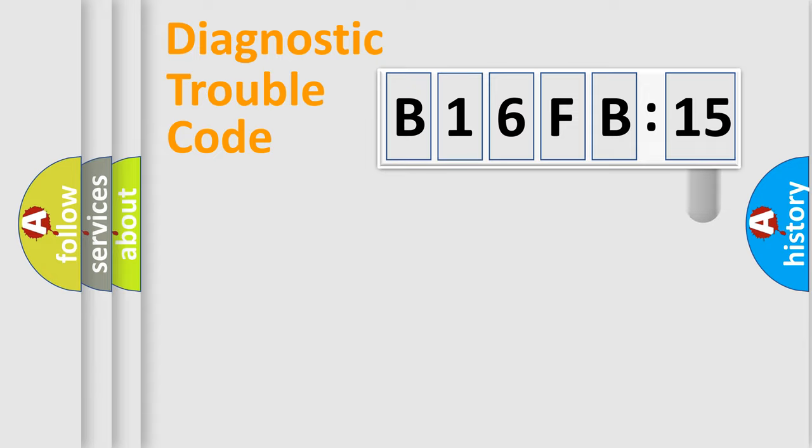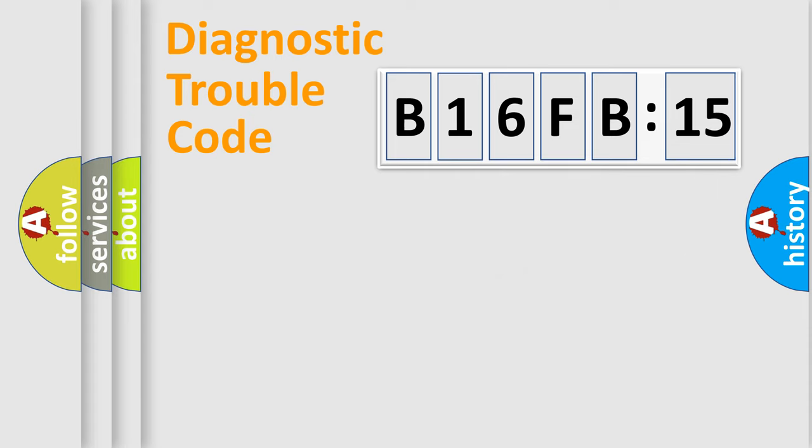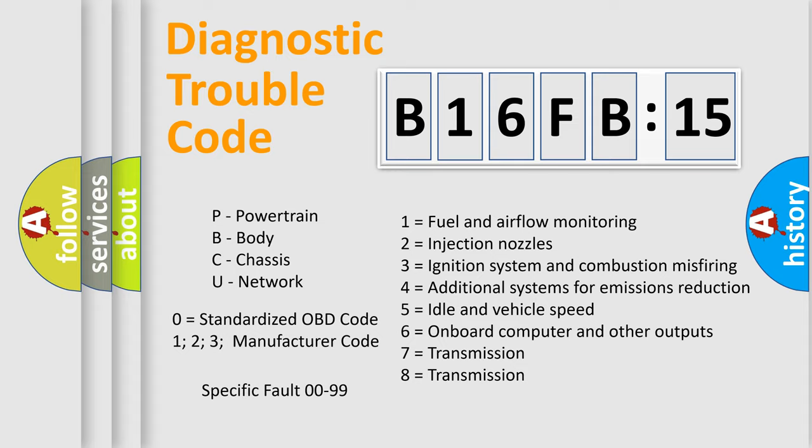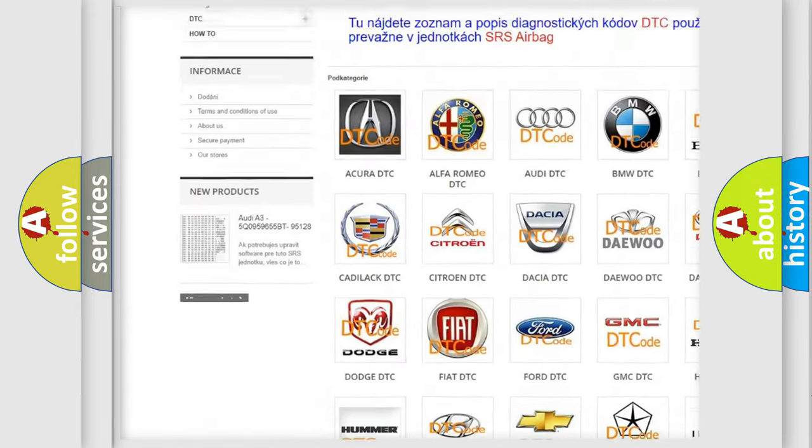Our website airbagreset.sk produces useful videos for you. You do not have to go through the OBD2 protocol anymore to know how to troubleshoot any car breakdown. You will find all the diagnostic codes that can be diagnosed in Chrysler vehicles and many other useful things.